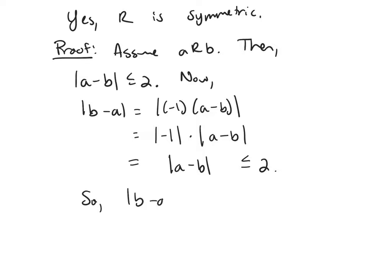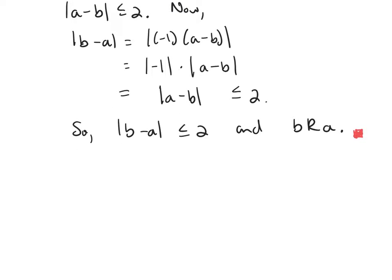Since the absolute value of A minus B is less than or equal to 2, we have that the absolute value of B minus A is less than or equal to 2, and we've shown that B is related to A. So R is, in fact, symmetric. Now let's look at part C: prove or disprove that R is transitive.